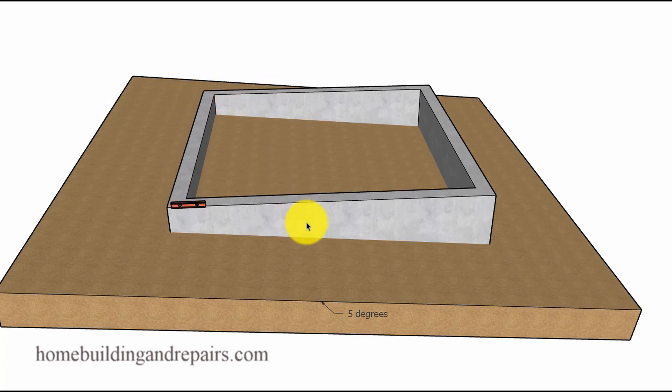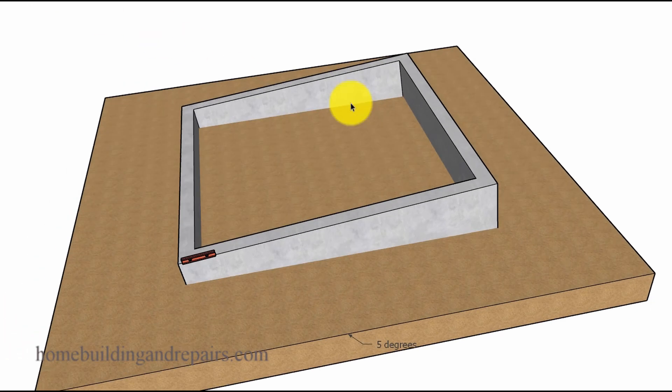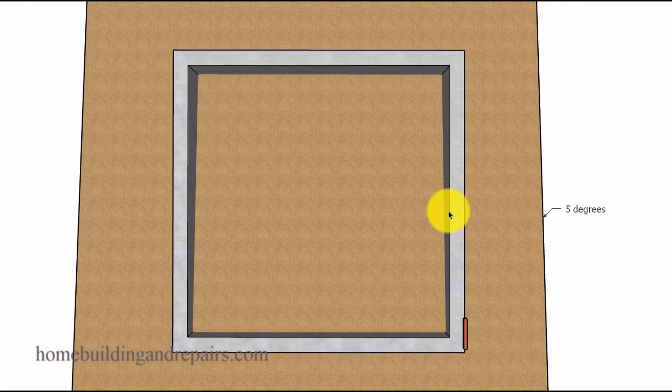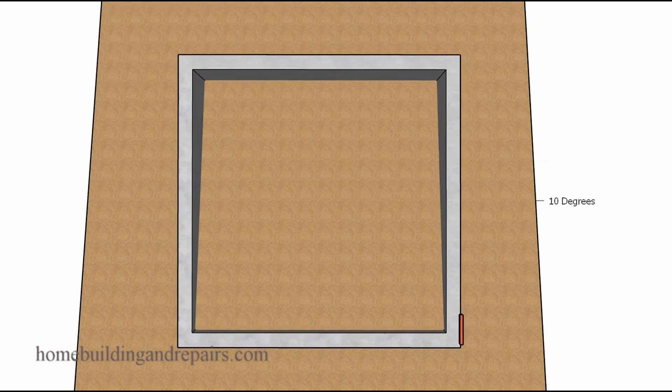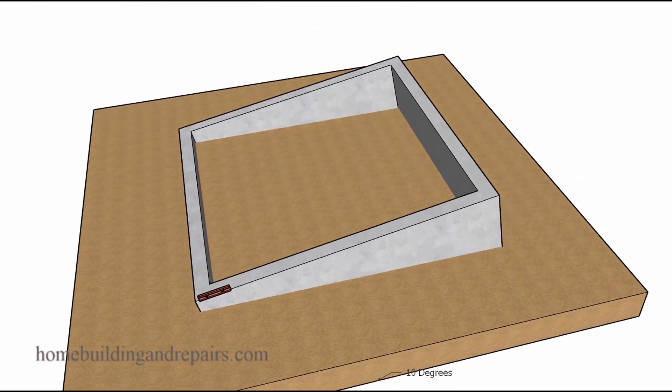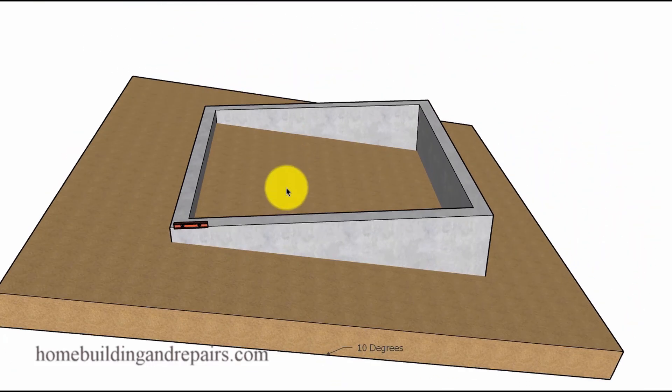As we can see here, for our 20 foot by 20 foot building, if you have a five degree slope you might not need to step the footings down. However, if we double the slope to 10 degrees and we think we can save a few dollars on the concrete, then we might want to step the footing down.